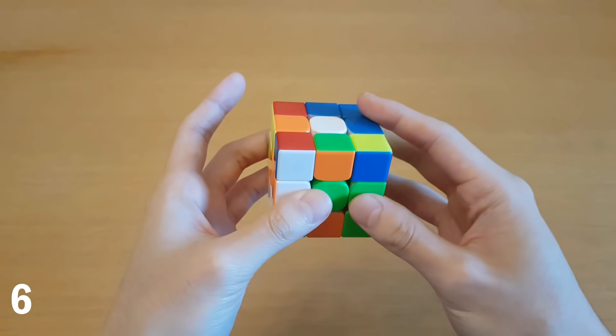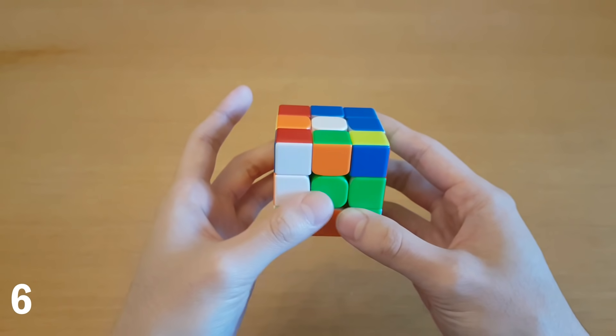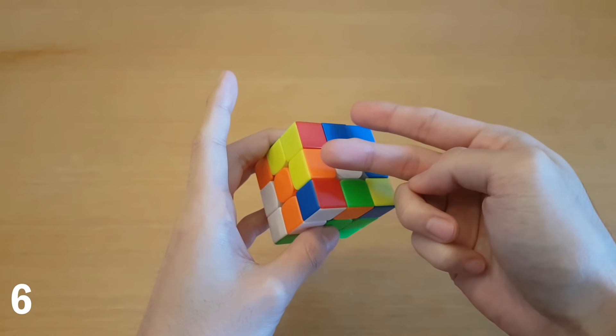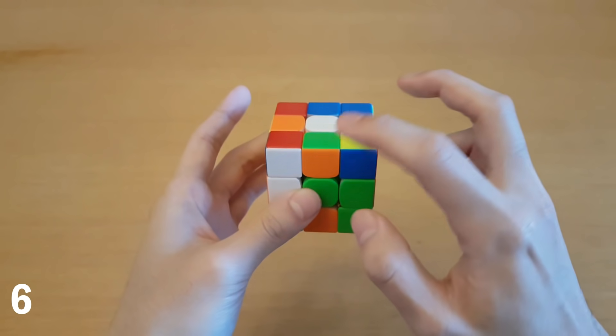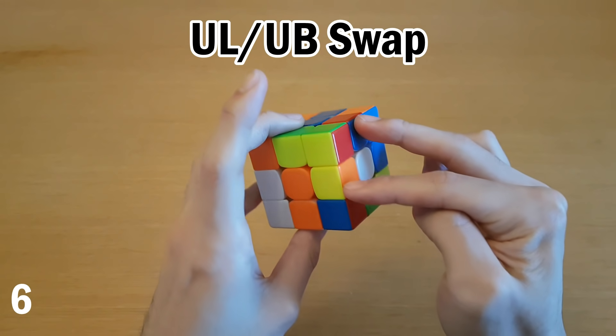When there's parity, what you want out of the edges is to have two edges swapped. And so if you use old Pacman for corners, then you want these two edges swapped, because your corner algorithm will swap them back at the end. And if you're using three style, then you want the UF and UR swapped.